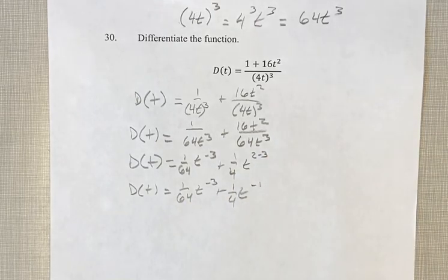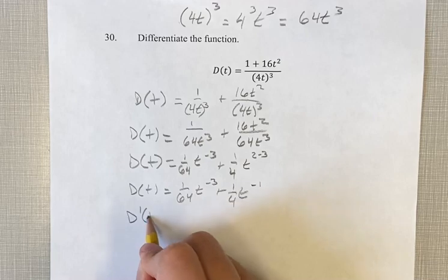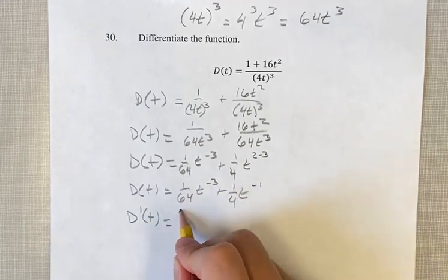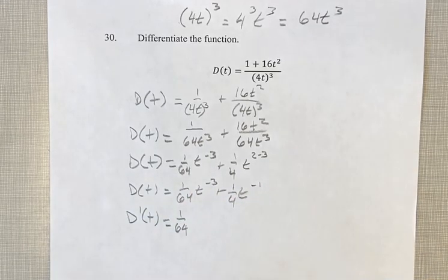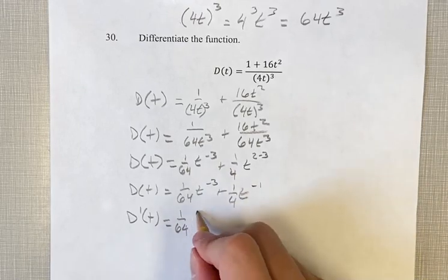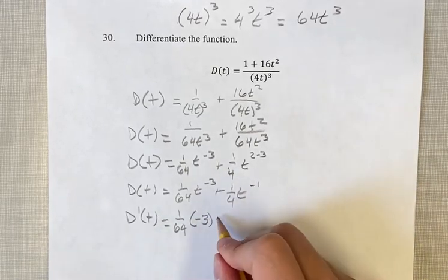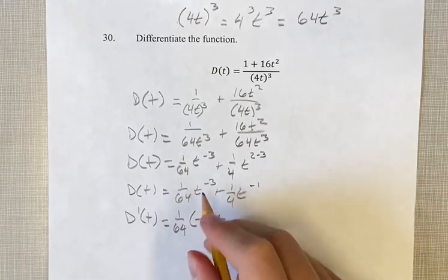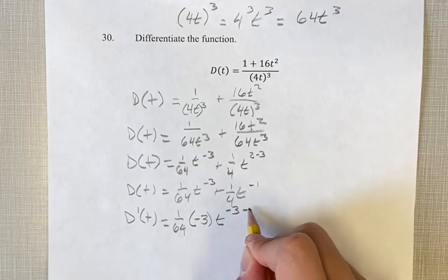Now we have two power functions, and we can find the derivative. First, getting the coefficient out of the way, leave that alone. Take the exponent and multiply it by the coefficient. Then your new exponent is the old one minus 1.